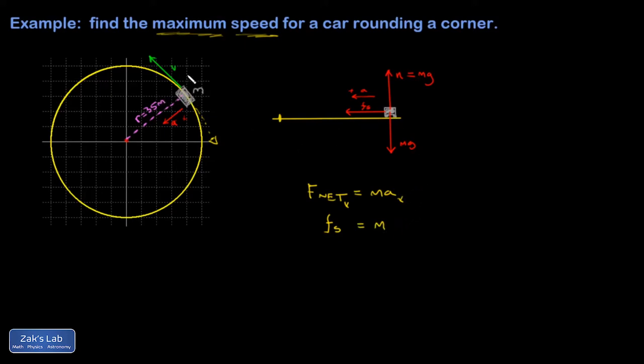And my acceleration in the x direction, well, in order to move on a circular path with the speed of v and a radius of r, the magnitude of the acceleration must be v squared over r. This is really just a geometric fact about what it takes to trace out a circular trajectory.